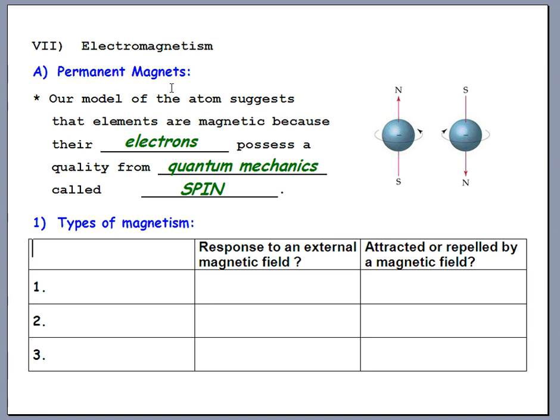Spin is not something you can deal with in physics without talking about quantum mechanics. We like to envision it as the actual electron spinning like a child's top — it can spin one way or the other — and depending on which way it's spinning, that decides which end is north and which end is south. But it really is a quantum mechanics effect. The atoms making up the magnetic material could have their north end pointing one way or the other.